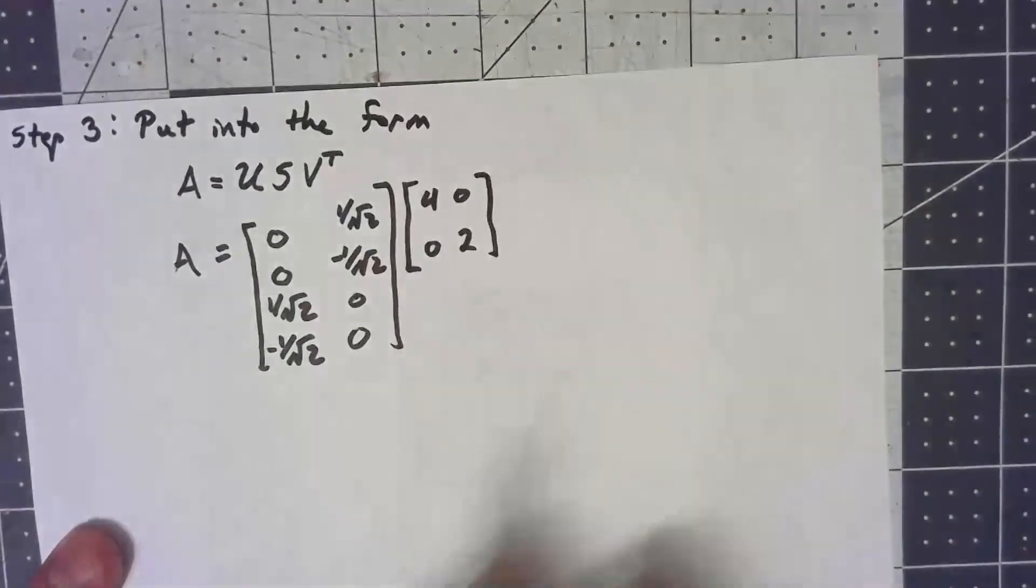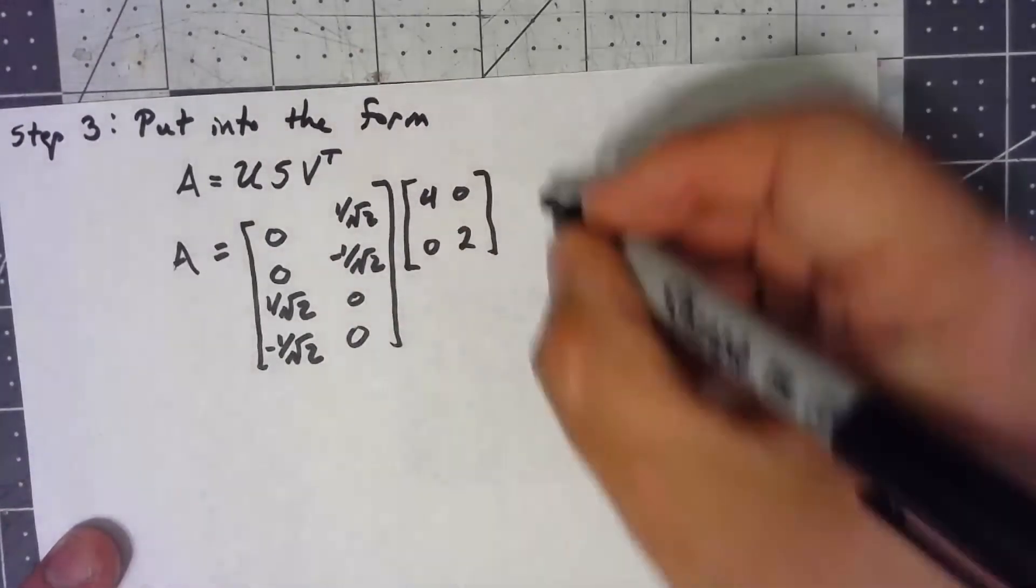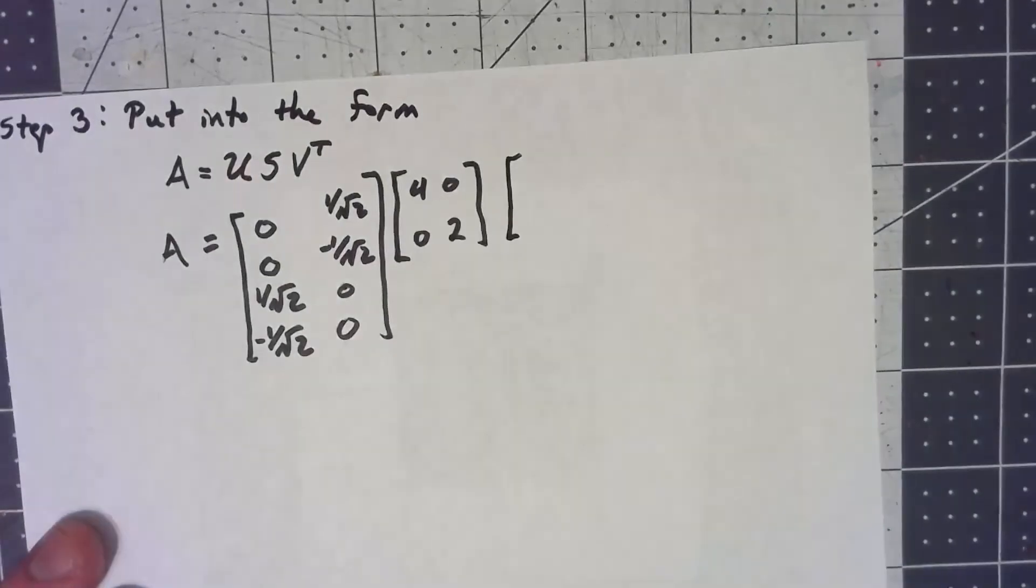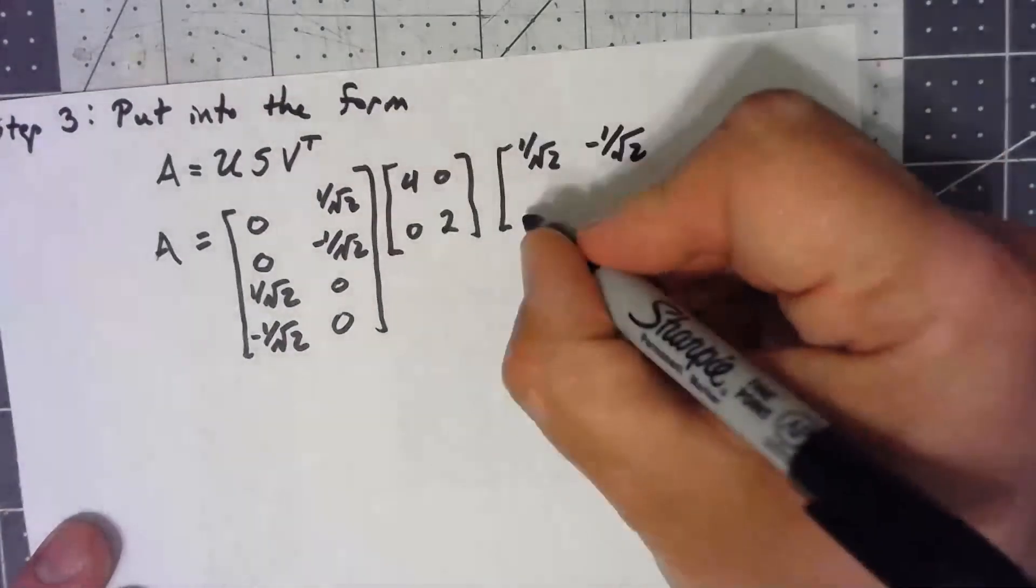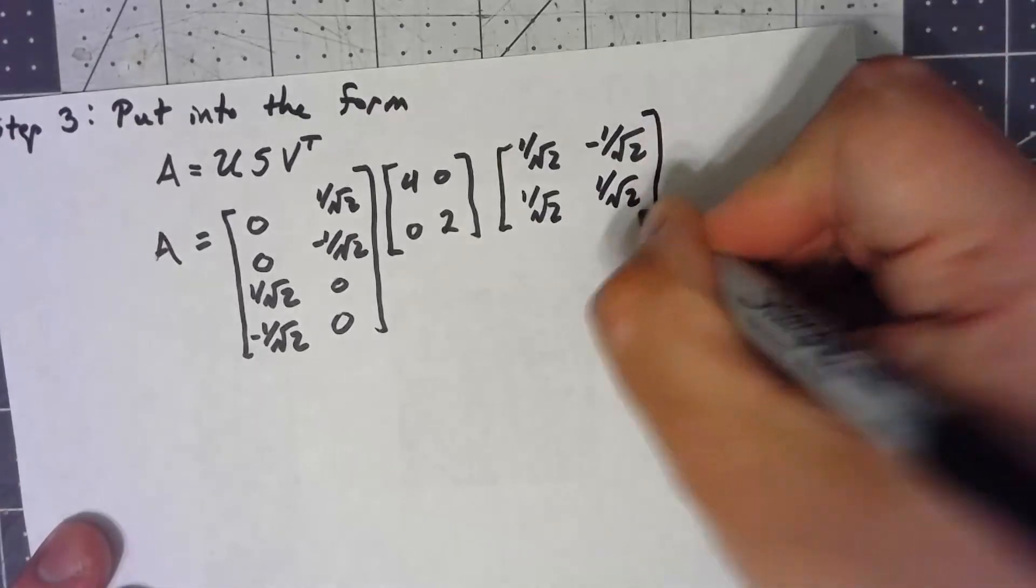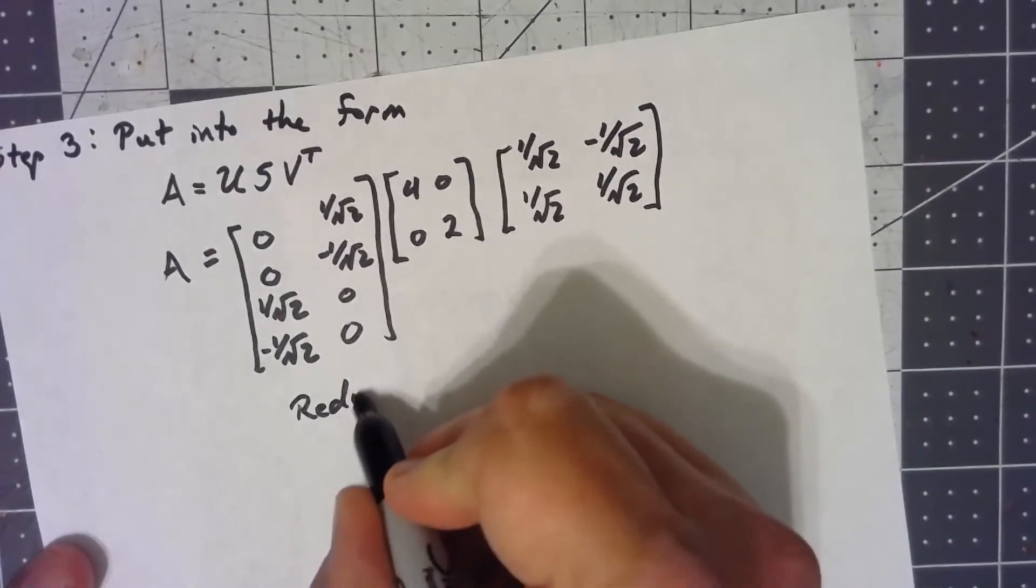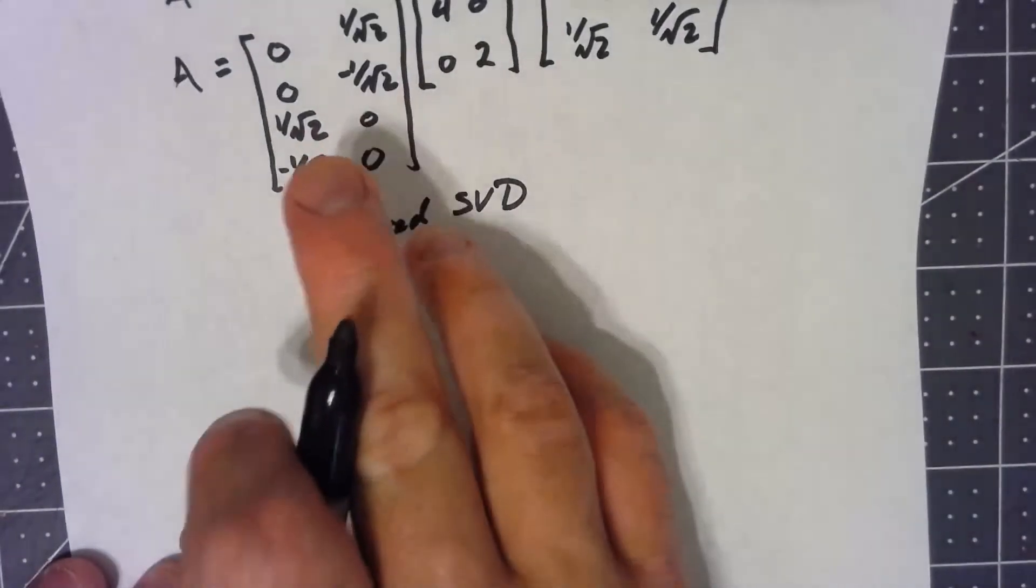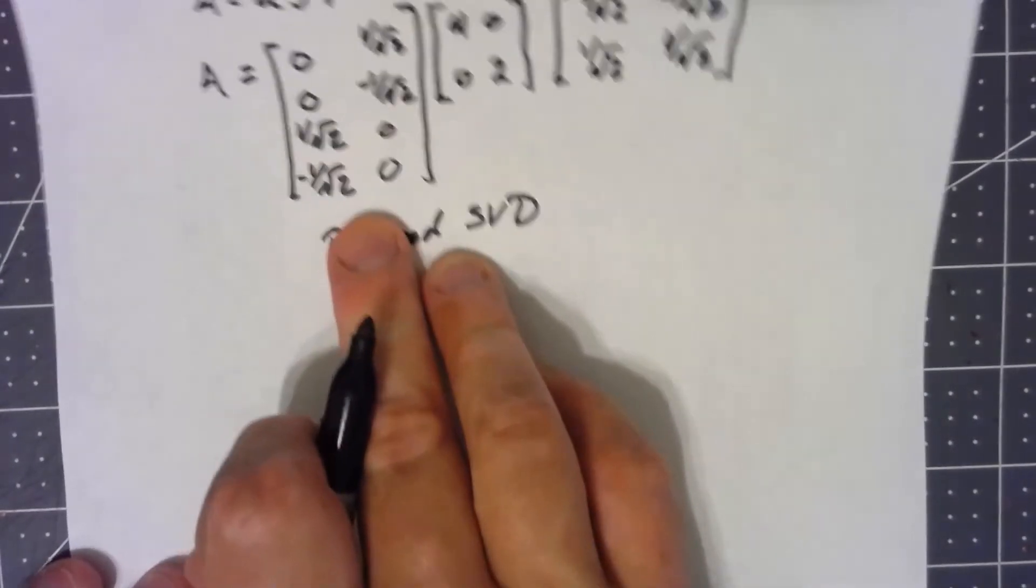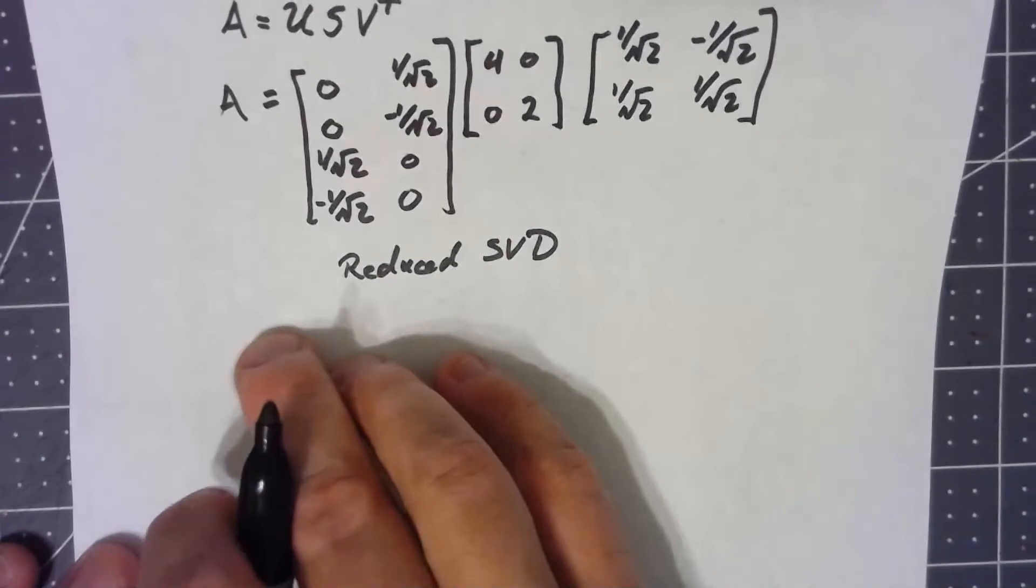Now, technically, what we just found is what we call the reduced singular value decomposition. And the reason it's reduced is that the u isn't a full basis for all of R^4. The columns of u are only, well, there's only two of them, whereas for a full basis I would need 4.